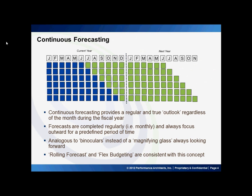More effective in providing future vision is a concept called continuous forecasting. With this model, forecasts are executed more regularly — or as this model shows, each month. This example also shows a 12-month rolling forecast where, no matter what month you are in, you are always looking 12 months ahead. Many organizations are moving from a traditional budgeting model to a continuous forecasting model or flex budgeting model.